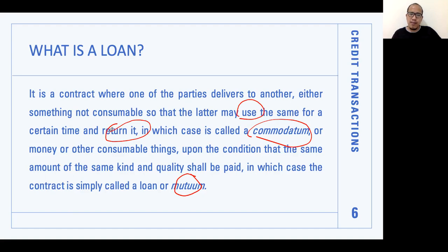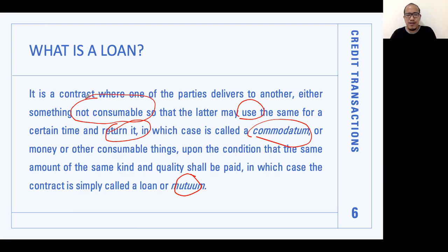Borrowing a calculator is commodatum — after using it, you return it. The exact item that was lent must be returned; you cannot return something different. That is why only non-consumable things can be the subject of commodatum. You cannot borrow water under commodatum because you cannot return the same water after drinking it. Similarly with rice — if you cook it into rice and return the cooked form, that is not the same. Unless you just display the rice without consuming it, in which case it could still qualify as commodatum. As a general rule, consumable things are not the subject of commodatum because you must return the exact item that was lent.